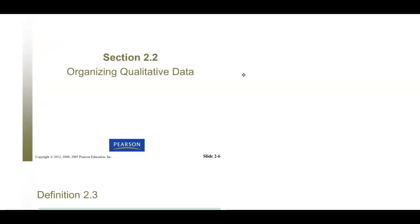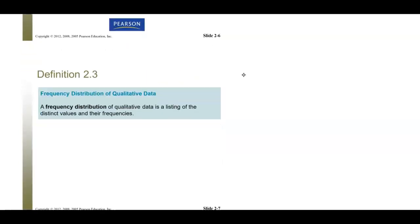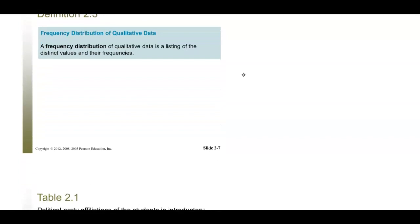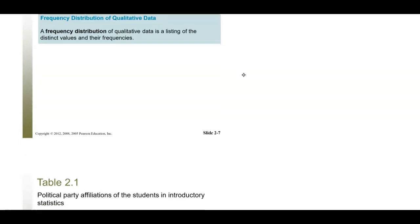Now, organizing qualitative data. We will not spend a lot of time on qualitative data in this course — we will be working mostly with quantitative, numerical data. But we can organize it, and the best way to start organizing qualitative data is using a basic frequency distribution. You have seen tally marks before — this is counting up how many of each category and making a tally.